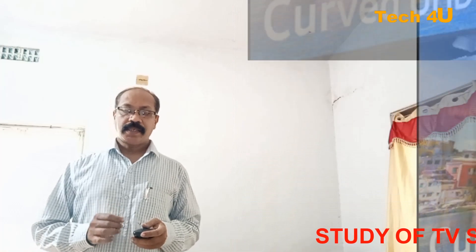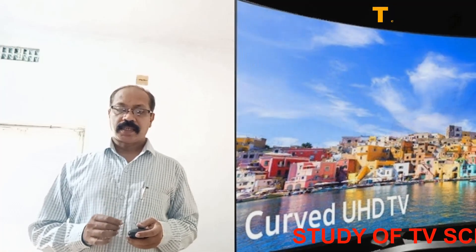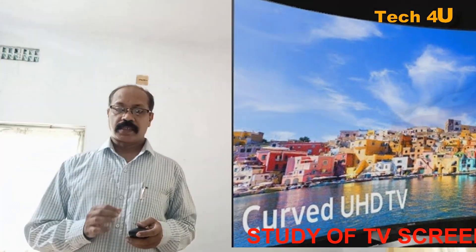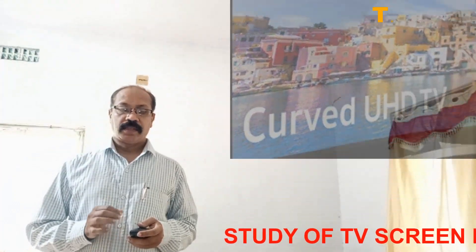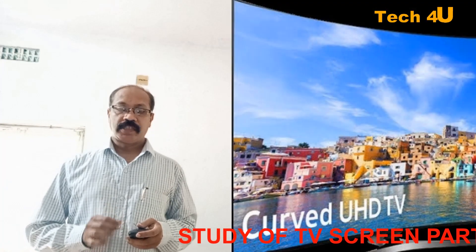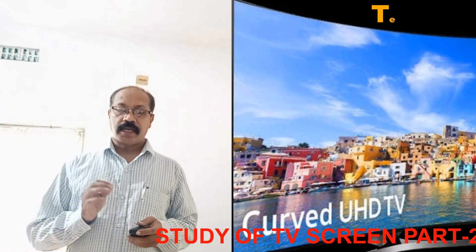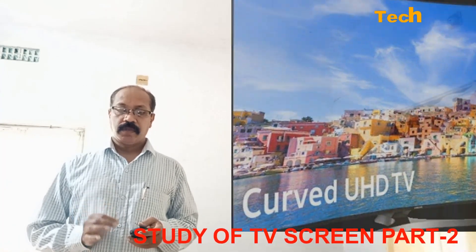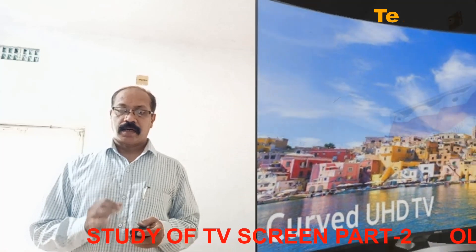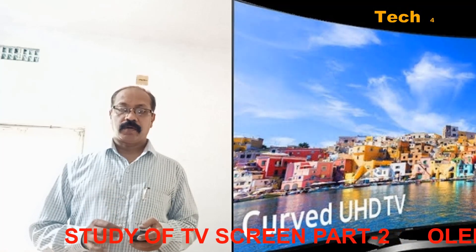The basic OLED cell structure consists of a stack of thin organic layers sandwiched between a conductive anode and a conductive cathode.